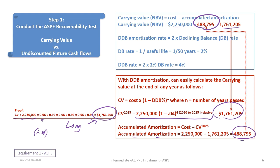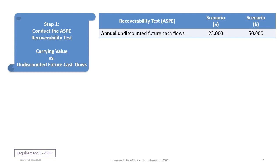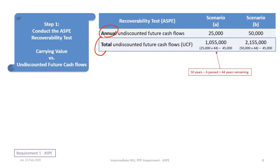Now that we know the carrying value, we factor in the undiscounted future cash flows. Scenario A has annual undiscounted future cash flows of $25,000, and Scenario B has $50,000. To get total undiscounted future cash flows, we multiply the annual amount by the remaining useful life of 44 years (50 years minus the 6 already elapsed), then subtract the $45,000 disposal cost. Under Scenario A: ($25,000 × 44) − $45,000 = $1,055,000.